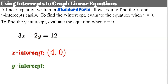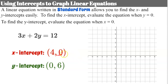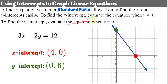Now let's find the y-intercept. The y-intercept must have an x-coordinate of 0, so the x term is eliminated. Solving 2y equals 12 — divide both sides by 2 — gives a y-intercept of 6. Now let's graph: I'll plot the ordered pair (4, 0) for the x-intercept, then (0, 6) for the y-intercept, and connect them with a line. The line 3x plus 2y equals 12 has an x-intercept of 4 and a y-intercept of 6.